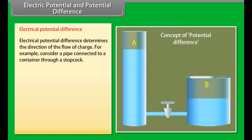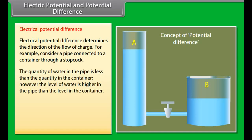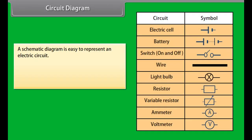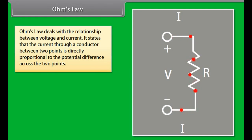Consider a pipe connected to a container through a stop cork. The quantity of water in the pipe is less than the quantity in the container. However, the level of water is higher in the pipe than the level in the container. When the stop cork is opened, water flows from the pipe to the container until the levels are equal. This shows it is not the quantity but the level — the potential difference — that determines the direction of flow. The symbol I was used by André-Marie Ampère, after whom the unit of electric current is named, following his formulation of Ampère's force law, discovered in 1820.